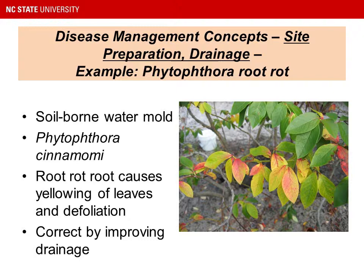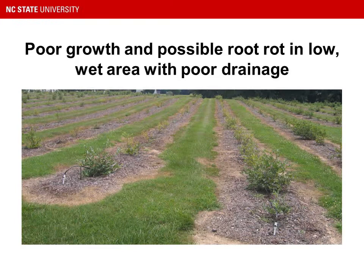We talked in an earlier session about site preparation and drainage as a good general cultural practice, but it's also a disease management practice, especially when Phytophthora root rot is present in a site. It's around in a lot of places — it's a soil-borne water mold, Phytophthora cinnamomi, and it's a root rot disease. Once the roots are damaged, you start to see symptoms where the blueberry leaves yellow prematurely and fall off, and the pathogen can eventually kill the plant. The way to correct this long-term is by improving drainage. This is an area of poor growth, a low spot in the field; the field was not tested for Phytophthora root rot, but it's quite possible that's part of the problem, where you see the bushes at the edges of the field doing fairly well and the ones in the low spot yellowing and dropping leaves.